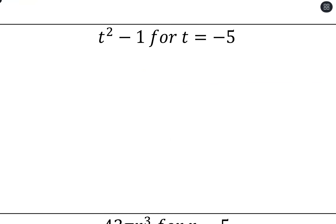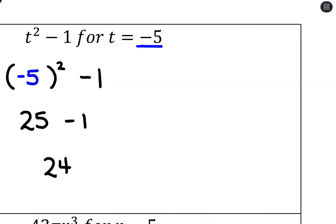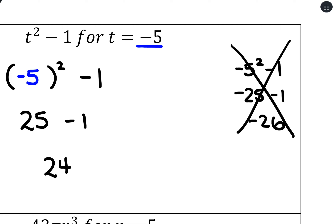With t² minus 1, parentheses are super important. Where I have t², I write (t)² minus 1, then substitute t = negative 5: (negative 5)² minus 1, which simplifies to positive 25 minus 1, giving 24. If we had left off the parentheses and written negative 5² minus 1, that would technically be negative 25 minus 1, giving negative 26 — way off from the correct answer.